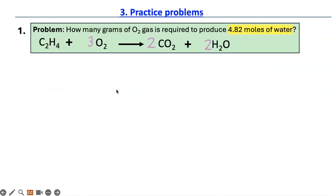Here is our first problem. This was the same one we balanced in lesson two. So it's asking how many grams of oxygen are required to produce 4.82 moles of water. So we are dealing with this guy and that guy.